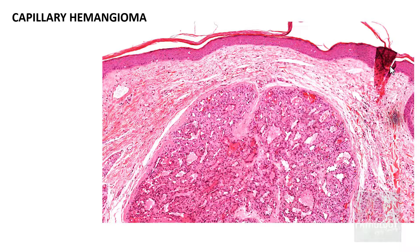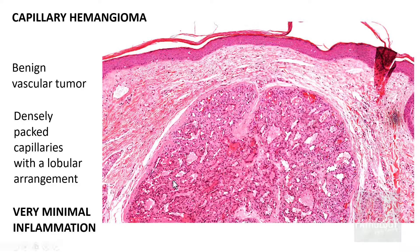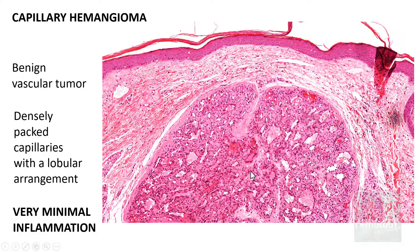Granulation tissue can be confused with capillary hemangioma, which is one of its differential diagnoses. You need to know the difference. Capillary hemangioma is a benign vascular tumor — it is a circumscribed lesion formed of densely packed capillaries with a lobular arrangement, and most importantly, it contains very minimal inflammatory cells. Unlike granulation tissue, which contains lots of inflammation, capillary hemangioma contains very minimal inflammation, particularly at the involution phase. In contrast, granulation tissue has haphazardly placed proliferating capillaries — unlike the lobular arrangement of capillary hemangioma — and contains lots and lots of inflammatory cells.